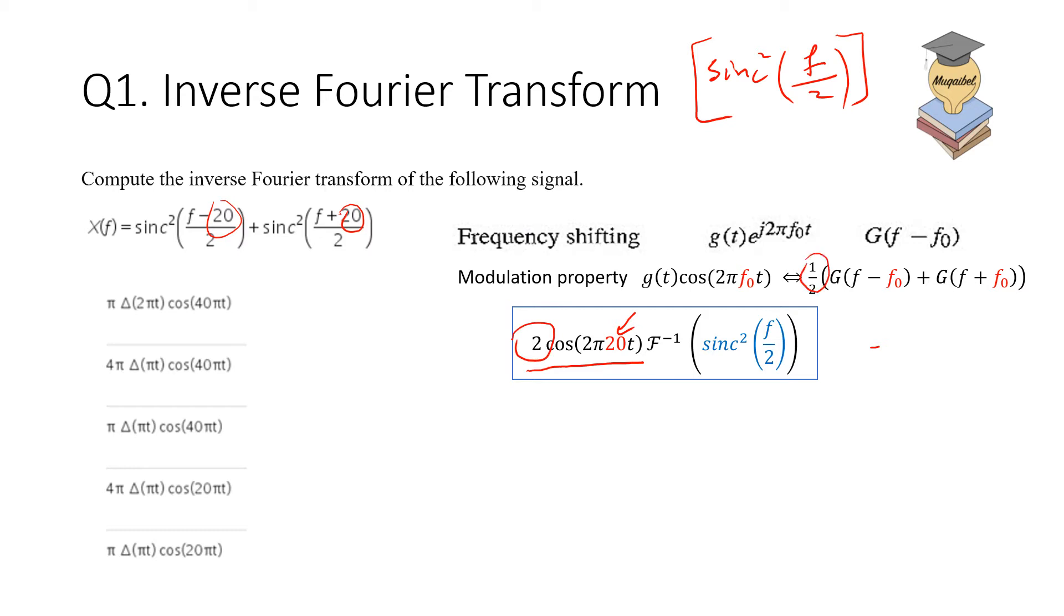Now our job is to find the inverse Fourier transform of sinc squared. Going back to the table, we can find that in the frequency we have sinc squared here, which is given by the triangle function.